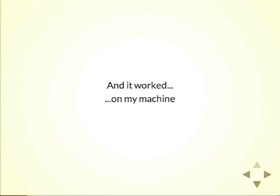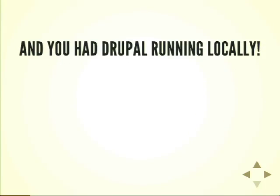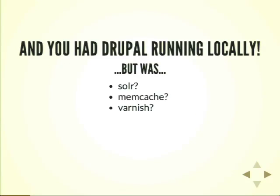We called it MAMP and WAMP and ZAMP and it worked on my machine. This is a Vagrant talk, so we had to have the obligatory 'it works on my machine' slide. And you had Drupal running locally, but was Solr running? Was Memcache running? Was Varnish running? Redis, SSL, Selenium? There were all these pieces that you really needed but didn't have, so a lot of people still ended up developing on production because those tools just weren't easy to set up.